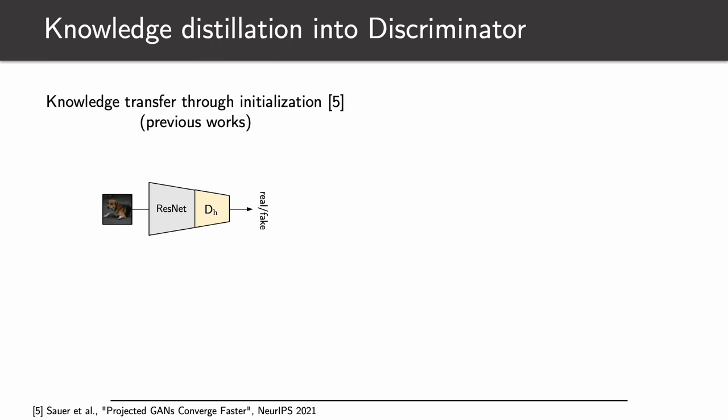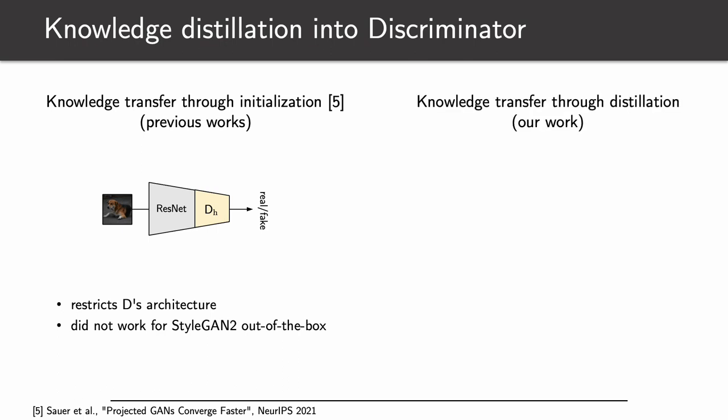We develop a very general technique for improved GAN training by incorporating external knowledge into the GAN model. Recently, several works explored knowledge transfer into GANs through initialization — taking a pre-trained encoder like ResNet or ViT, setting it as the main discriminator component, freezing it, and initializing a lightweight discriminator head on top of it. This approach is simple but comes with two issues: first, it restricts the overall discriminator's architecture — for example, if you want patchwise training or depth maps as an additional input channel, you cannot use it easily. Also, it caused divergence for us with StyleGAN2. In our work, we propose to do knowledge transfer through knowledge distillation and find it to work considerably better.